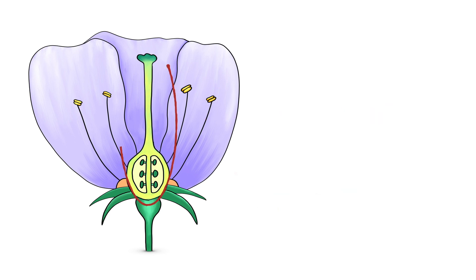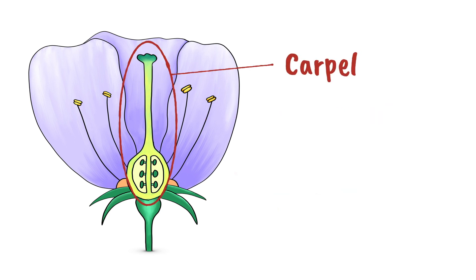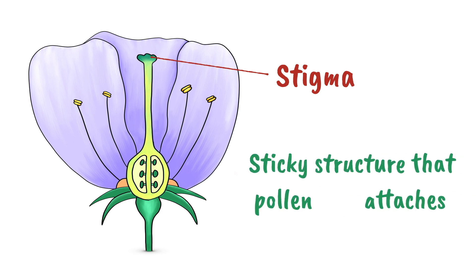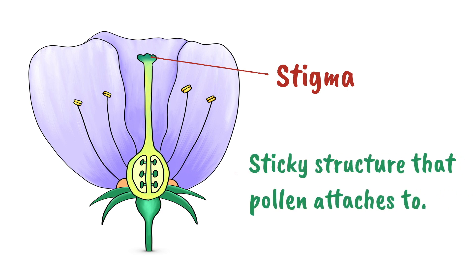This central structure is called the carpel and this is the female part. At the top of the carpel is the stigma. This is a sticky structure that pollen attaches to.